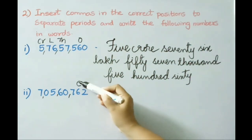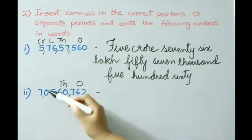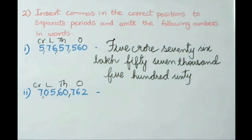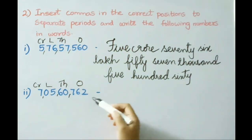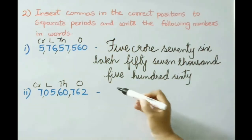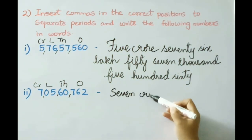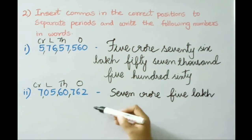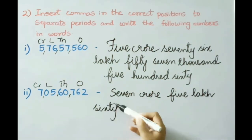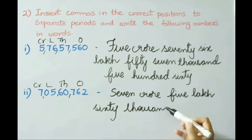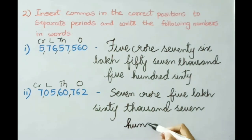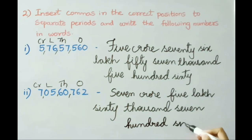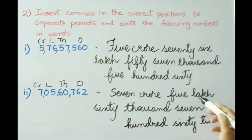Now mention their periods: ones period, thousands, lakhs, and crores. Now read the number: 7 crore, 5 lakhs, 60,762. Write down the number name: 7 crore, 5 lakhs, 60,762.